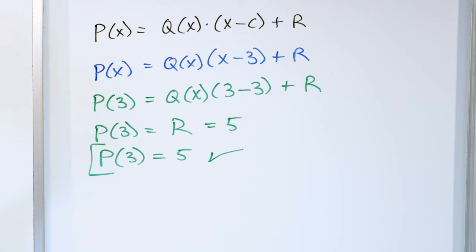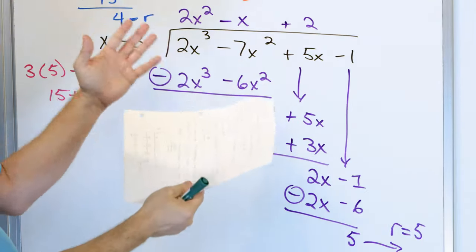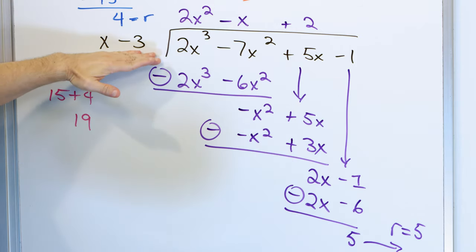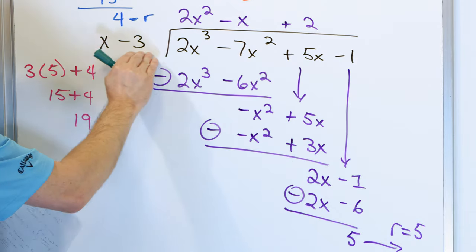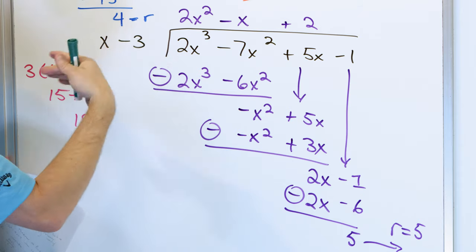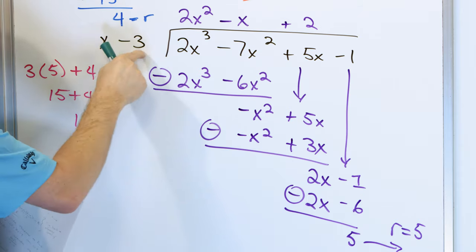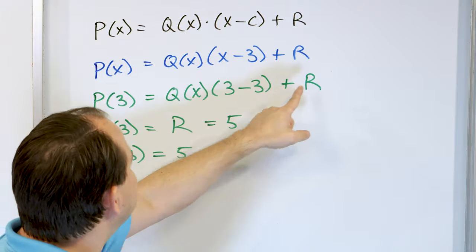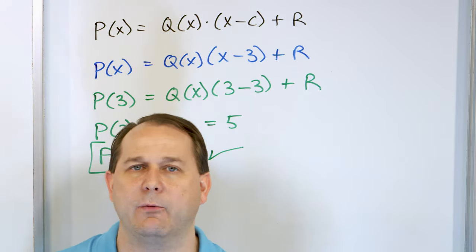The reason it works is because when you do division, you have the answer at the top times your divisor, and then you add the remainder. But if you divide by a very special number — specifically x minus whatever you're trying to evaluate at — then when you plug that value in, the divisor term goes to zero. So the remainder is always equal to what you're trying to find.